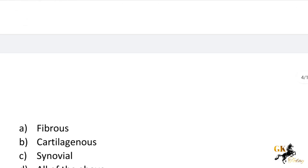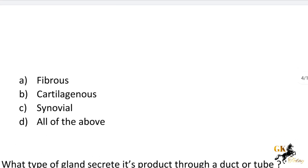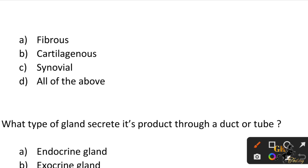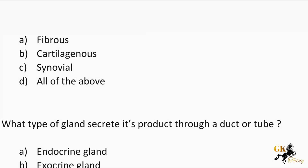Next question: Freely movable joint is — Option A: Fibrous. Option B: Cartilaginous. Option C: Synovial. Option D: All of the above. The correct answer is Option C: Synovial.